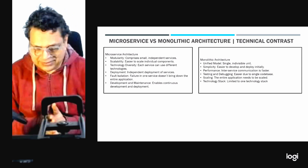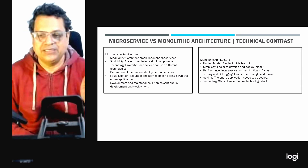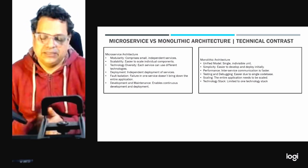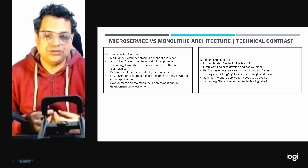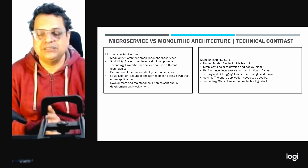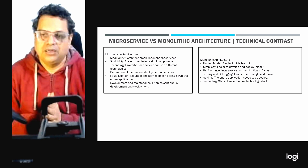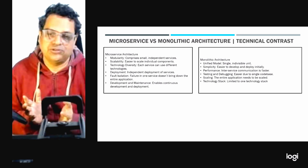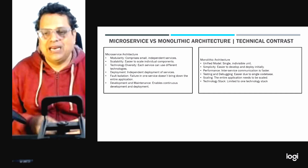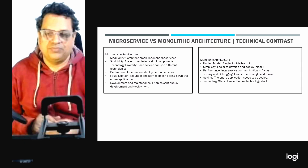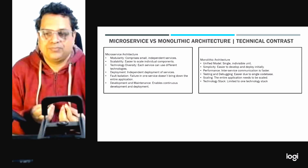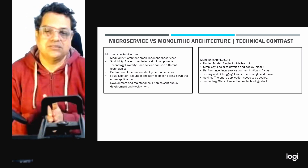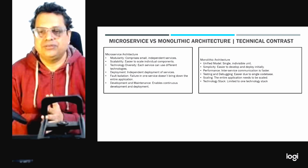Testing and debugging a single application is often simpler than a distributed system. However, scaling in monolithic architecture applies to the whole system — if you have a scaling requirement, you must scale the entire application, which can be less efficient and more expensive. Additionally, you do not have the liberty to choose multiple technology stacks in monolithic architecture, which can be a constraint. In microservices, you can independently choose the best stack for each microservice.